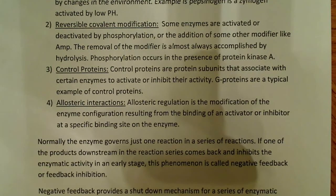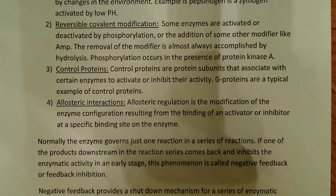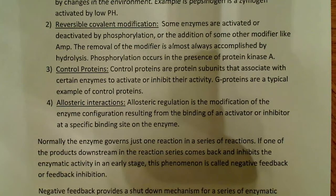The third type involves control proteins — protein subunits that associate with certain enzymes to activate or inhibit their activity. G-proteins are a typical example of control proteins. Probably one of the most common mechanisms is allosteric interactions. Allosteric regulation is the modification of an enzyme's configuration resulting from the binding of an activator or inhibitor at a specific binding site on the enzyme — usually a site other than the active site. The allosteric regulator binds at that location and causes a conformational change that either activates or inactivates the enzyme.